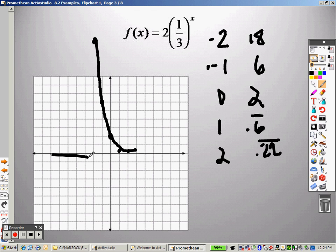Once again, this line right here, y equals 0, that is your horizontal asymptote. Your horizontal asymptote to the graph.